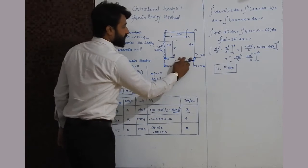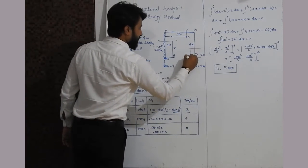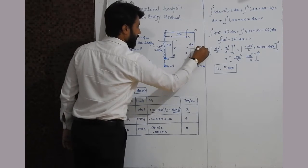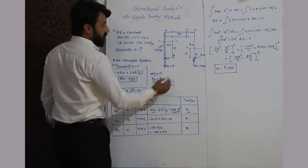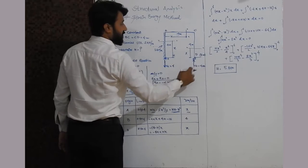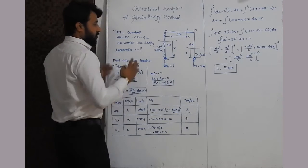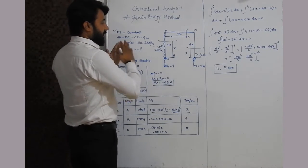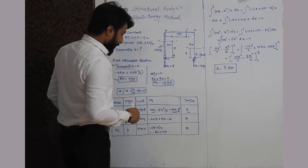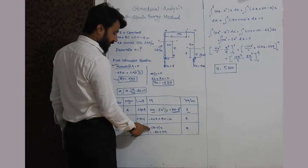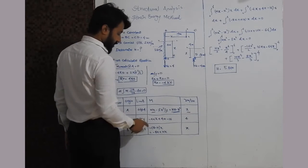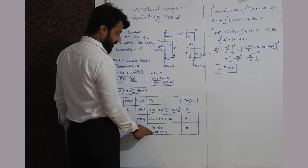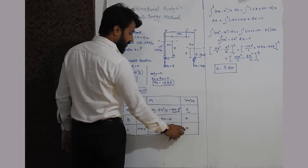For member DC, we consider a section at distance x from D. The only load acting is HD = 8 − H. Its rotation about the section is clockwise, and since we are taking moments on the right side of the section, clockwise is taken as negative. So M = −(8 − H)x = Hx − 8x, and ∂M/∂H = x.